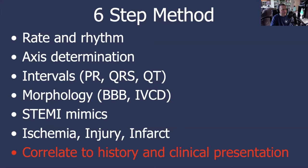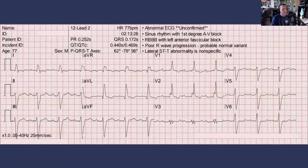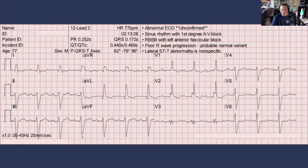Let's take everything we've just learned and apply it to an actual case study using the six-step method. EMS has been called to evaluate a 77-year-old male with a chief complaint of syncope. Paramedics arrive, get a set of vital signs, and record this 12-lead ECG. The first thing we always start with is rate and rhythm. The computerized measurement of the heart rate is 77 beats per minute, it looks like a nice regular rhythm. Verifying with my own eyes: finding an R wave that lines up with one of the large blocks, I count four large blocks between R waves, so the heart rate is right around 75. We can trust the computerized measurement of 77 beats per minute.